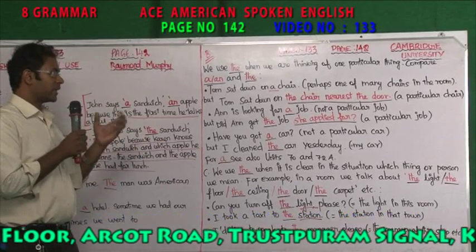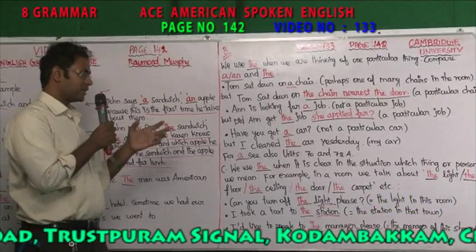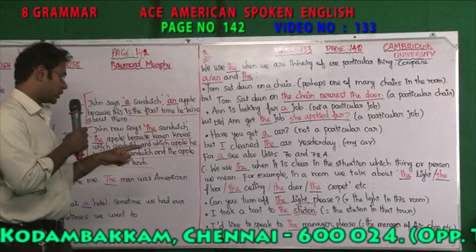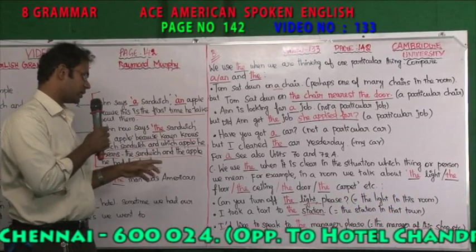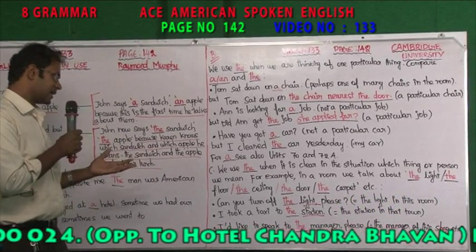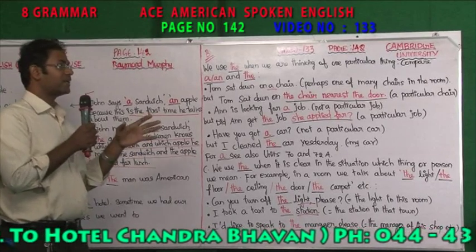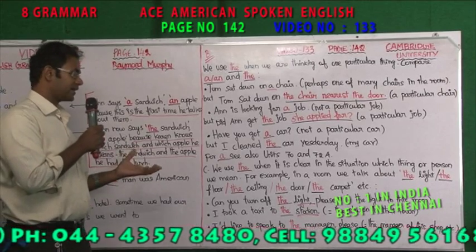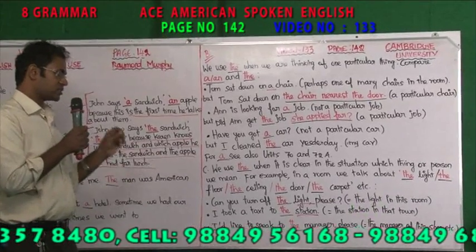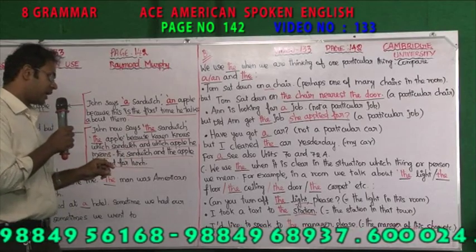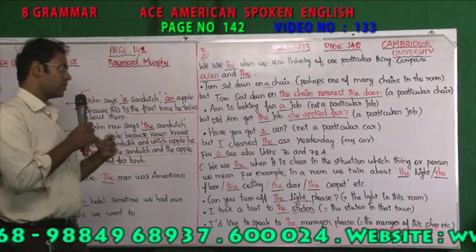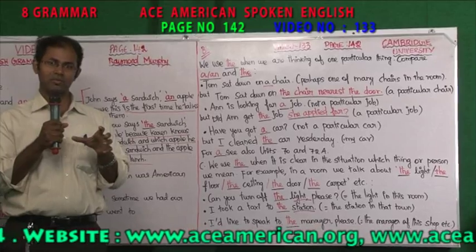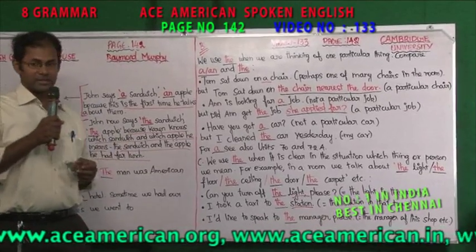Tom sat down on a chair — it might be any chair in a room, so we are using A. But Tom sat on the chair nearest the door — it is particular about the chair closer to the door, so we are using THE. Ann is looking for a job — any particular job, so we are using A. But did Ann get the job she applied for? The particular job — so we are using THE. Have you got a car? It might be any car, so we are using A. But I cleaned the car yesterday — which we own. We use THE when it is clear in the situation which thing or person we mean. Can you turn off the light please? — the light in this room, one particular light. I took a taxi to the station — the station, the particular station. I would like to speak to the manager please — a particular person in the shop. In this way the lecture explains about this topic.